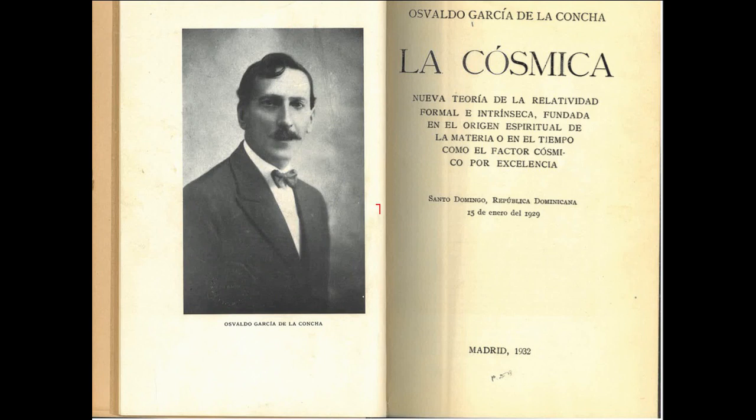Designating with V subscript zero the number of strokes which the clock gives per unit of time relative to K, and assuming the clock is at rest, the velocity of the clock that moves with speed velocity with respect to K and is on the disk, according to the example from paragraph 12.